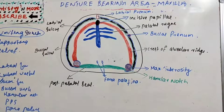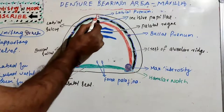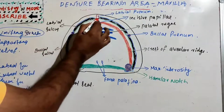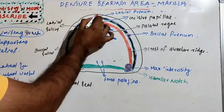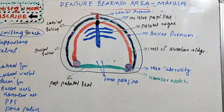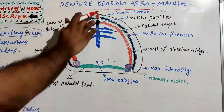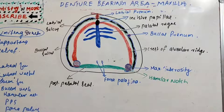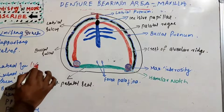The first limiting structure is the labial frenum. It is a single or double fibrous band covered by mucous membrane, extending from the labial aspect of the residual ridge to the lip. It contains no muscle fibers. Its clinical significance is that it limits the labial flange of the denture and must be relieved while making the impression to prevent dislodgement and ulceration. It is seen as a V-shaped notch in the impression.